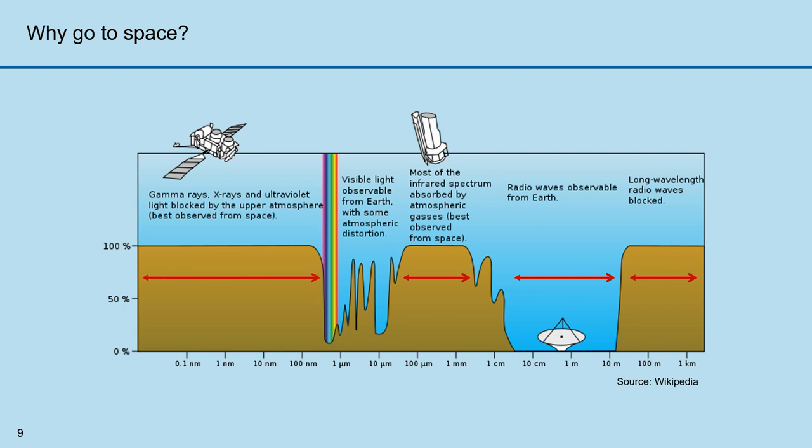There are parts of the electromagnetic spectrum that are blocked by the atmosphere. That's shown in these regions. Looking from the Earth out into space, you can't see infrared radiation very well. Same goes with x-rays.